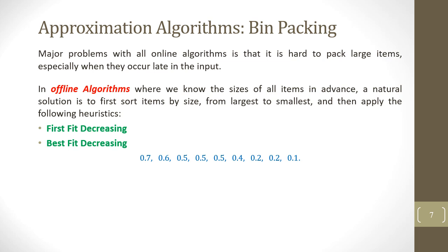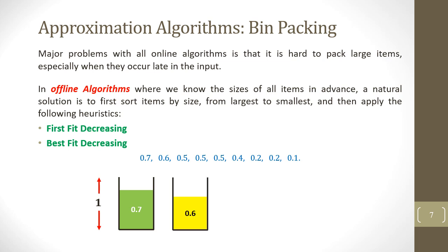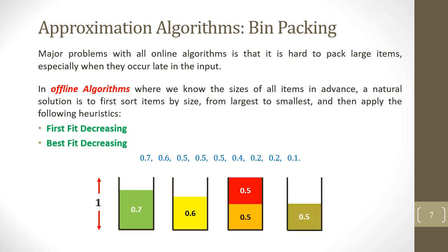Two offline heuristics are First Fit Decreasing and Best Fit Decreasing. Let's apply First Fit Decreasing. We sort all items by size in descending order. The first item goes into the first bin, the second item goes into the second bin since there is no space in the first, and the third item goes to the third bin. The fourth item of size 0.5 fits in the third bin, so it is placed there. The fifth item of size 0.5 goes to the fourth bin, and the sixth item of size 0.4 fits in the second bin, so it is placed there.